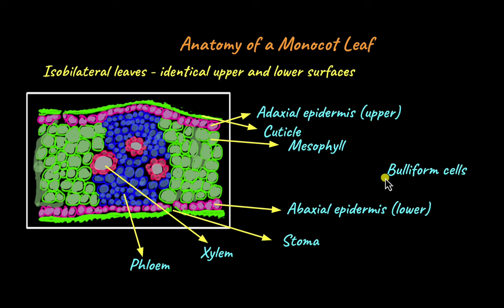But don't think that buliform cells are why touch-me-nots curl up when we touch them. Touch-me-nots are dicots and they don't have buliform cells. Then how do they curl up? Think of what happens when you accidentally touch a hot surface or a flame from a candle — how does your body respond? Figure that out and you would have answered why touch-me-nots close up when you touch them.